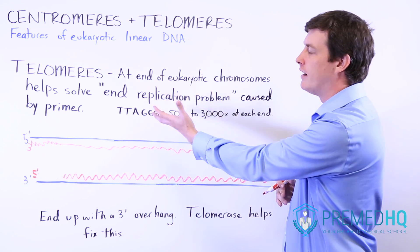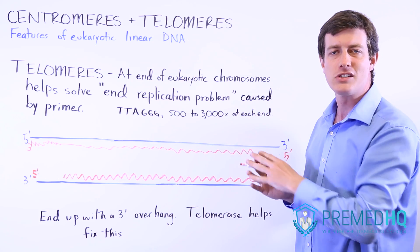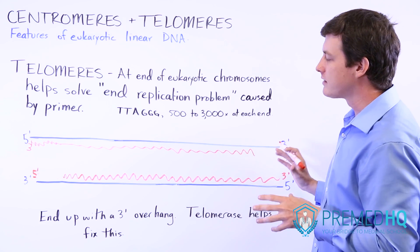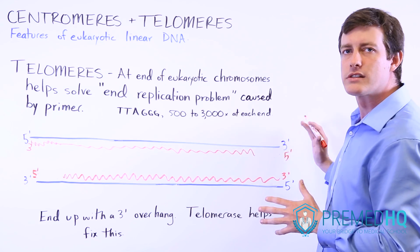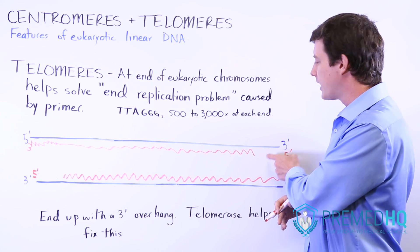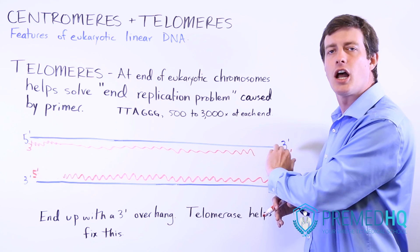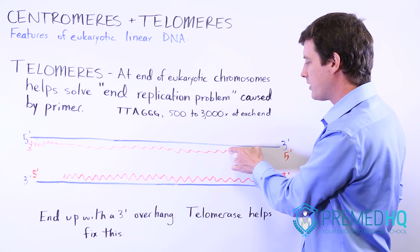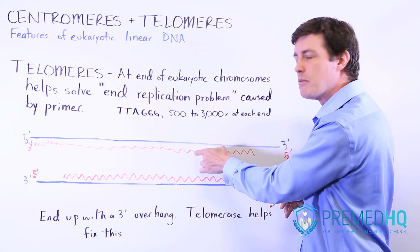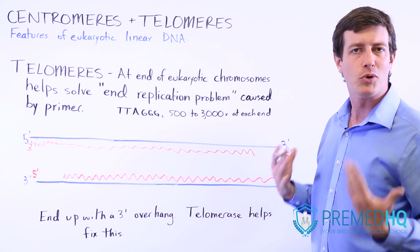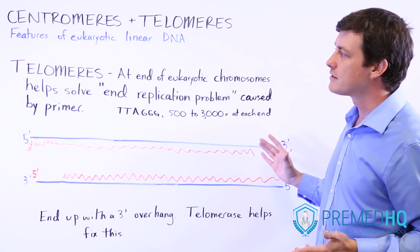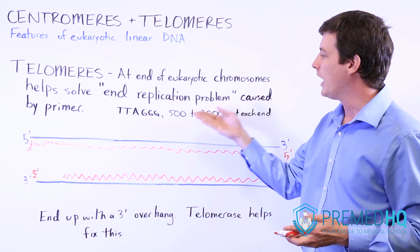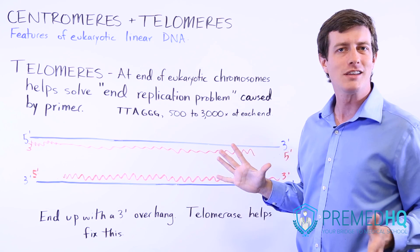Telomeres are an evolutionary feature that developed to solve this problem. They are not important for coding proteins and are not translated. What they are is additional repeated units that serve purely as a place where you can set up a primer and lose a bit of material without losing any of the important genes further along in the sequence. This allows multiple replication cycles without losing any of the important genetic information.